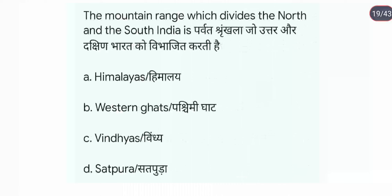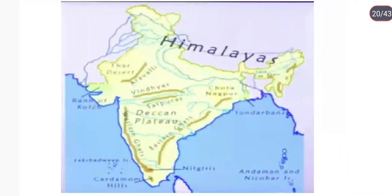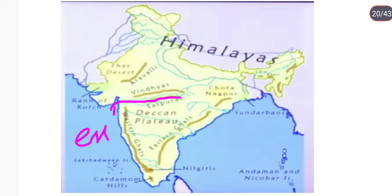The mountain range which divides North and South India is called the Vindhya Range। Vindhya Range divide करती है North और South India को। इसके बीच में बहती है नर्मदा नदी। नर्मदा नदी इसी के बीच में बहती है और यह block mountain में situated है।